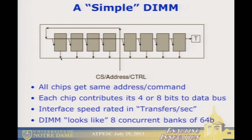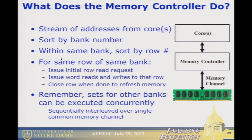A DIMM — the dual inline module you plug into your system — shares a row address across all chips, with each chip contributing a small number of bits to a 64-bit total output, plus ECC. The DIMM looks like eight concurrent banks of 64 bits. The memory controller — once on a separate chip, now integrated on the processor since AMD started that trend — sorts addresses by bank number, then by row, batching operations to maximize efficiency.